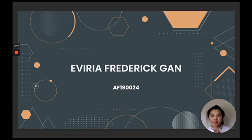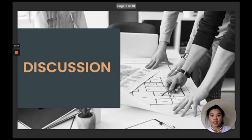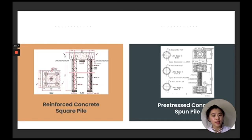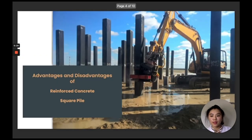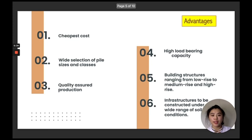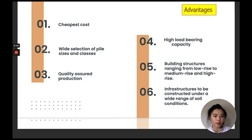Hi, have a good day Doctor. My name is Iberia Federica, matrix number AF190024. Today I'm going to present the discussion of our group project about reinforced concrete square pile and pre-stressed concrete spun pile. The discussion covers advantages and disadvantages of both piles. The advantages of reinforced concrete square pile are: cheapest cost, wide selection of pile sizes and classes, quality urgent production, high load bearing capacity, building structures ranging from low-rise to medium-rise and high-rise, and infrastructure to be constructed under a wide range of soil conditions.